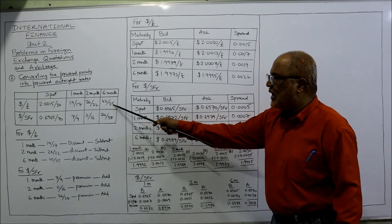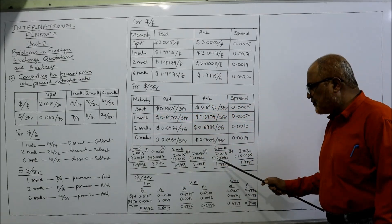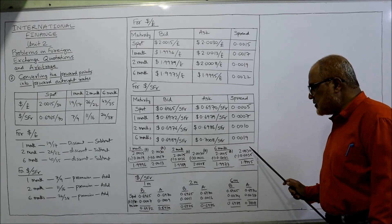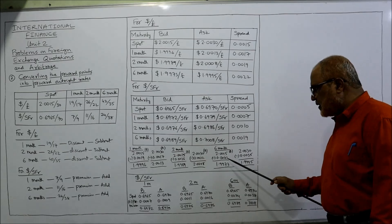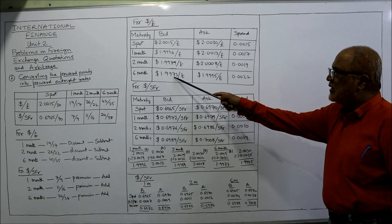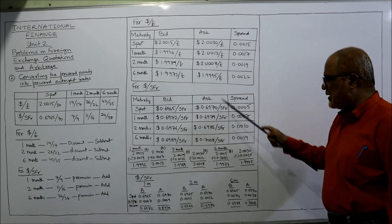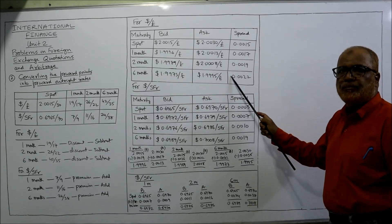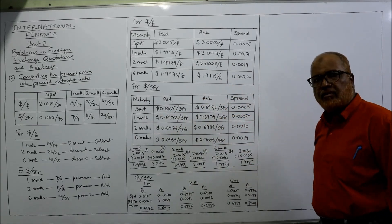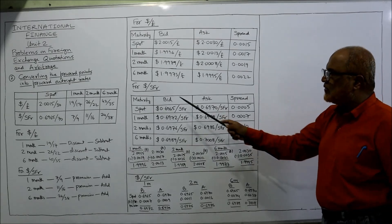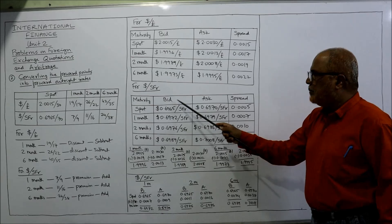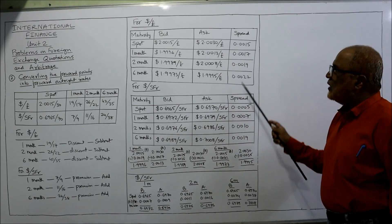For six months: the points are 42 and 35. Subtracting from the spot rate gives a bid rate of 1.9973 and an ask rate of 1.9995. So we have now converted all the forward points into forward outright rates for dollar per pound.